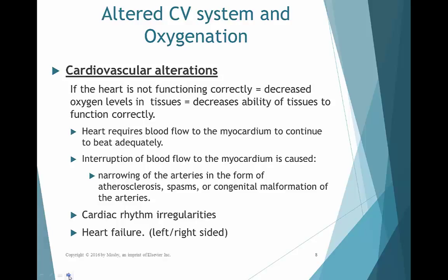Alterations in our cardiovascular system mean that if our heart isn't functioning correctly, we will have a decreased amount of oxygen reaching the tissue level. If tissues don't have adequate oxygenation, they run the risk of not functioning correctly. The heart requires blood flow to the myocardium itself through coronary circulation. When we have a disruption in blood flow to the myocardium, this is called myocardial ischemia, myocardial injury, and myocardial death — collectively termed myocardial infarction.